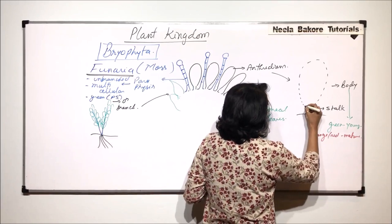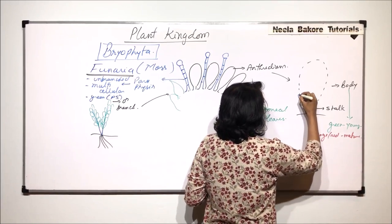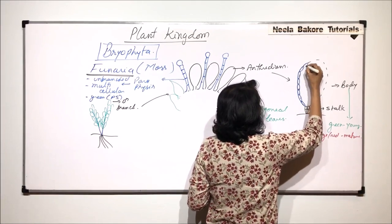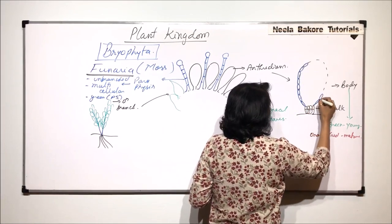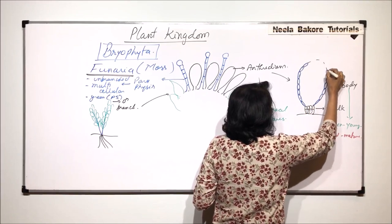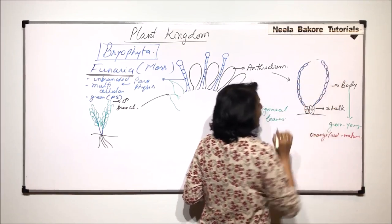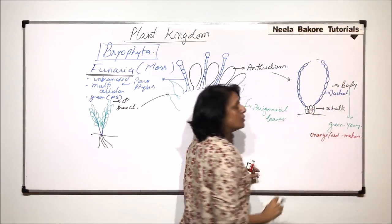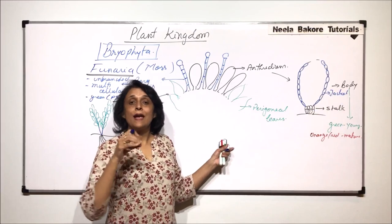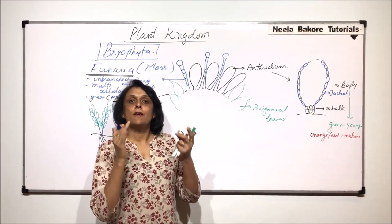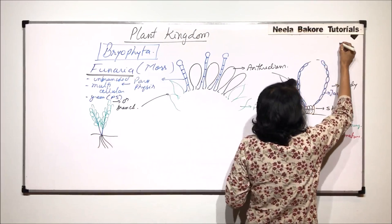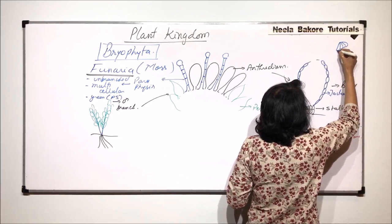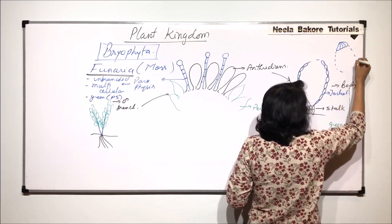This body has many polygonal cells which make the outer layer which we call the jacket. This is completely surrounded by flat cells and this forms the jacket. If you are looking at this antheridium from the top, the top is visible as if there are long cells, columnar cells, and then this is the complete body with all those polygonal cells.